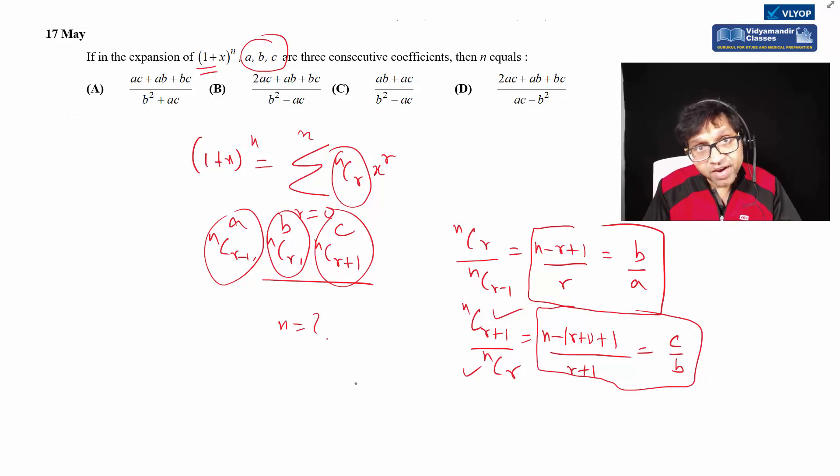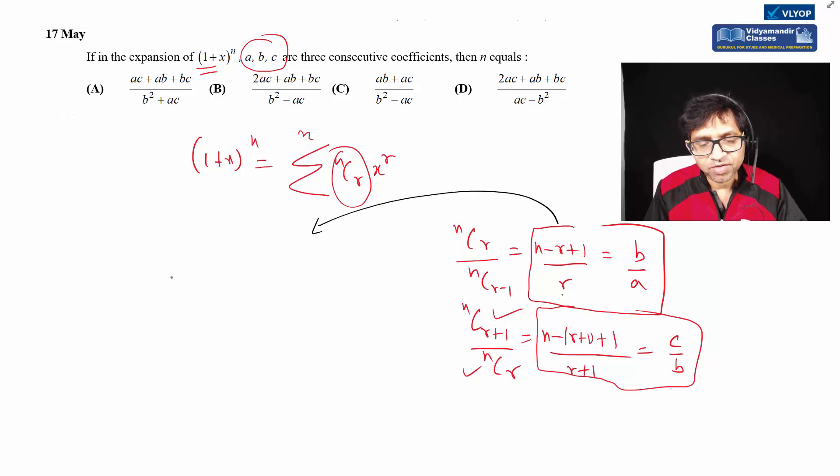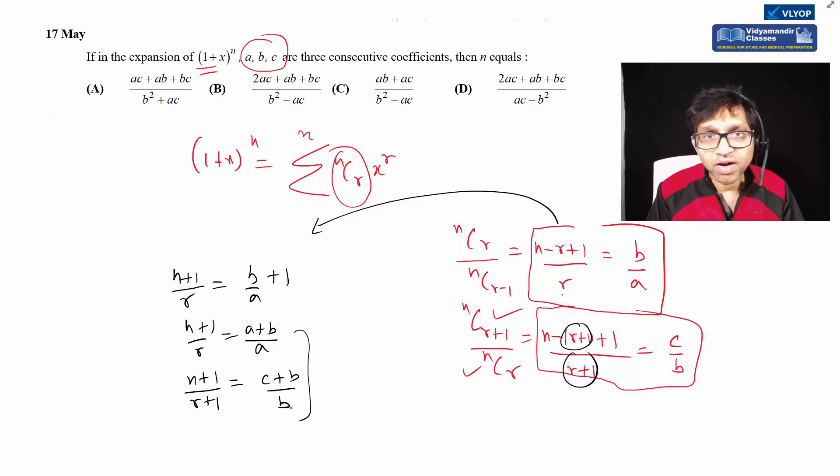We can replace r. Taking (n+1)/r on the left side, we get B/A plus 1. Taking LCM, (n+1)/(r+1) equals (A+B)/A. Similarly, (n+1)/(r+1) minus 1 equals (C+B)/B. Then 1/r equals (B²-AC)/(A(B+C)).